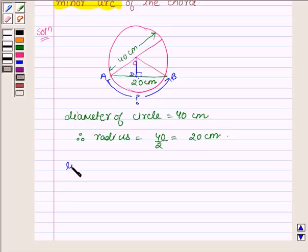Then in triangle ODB, OB upon DB which is equal to H upon P, which is further equal to - OB is equal to 20 cm being the radius of the circle.